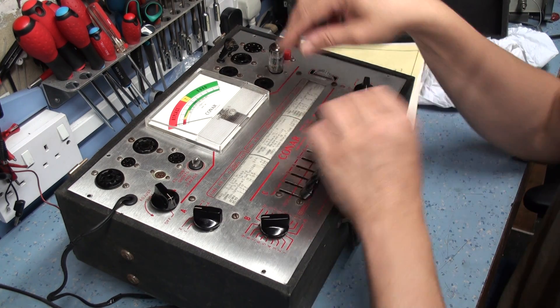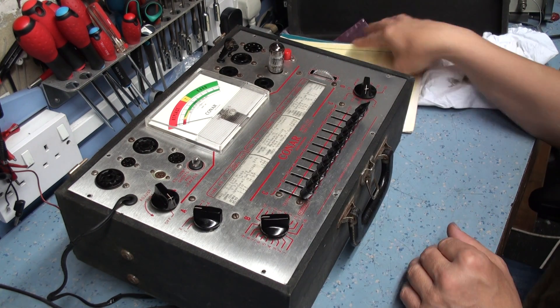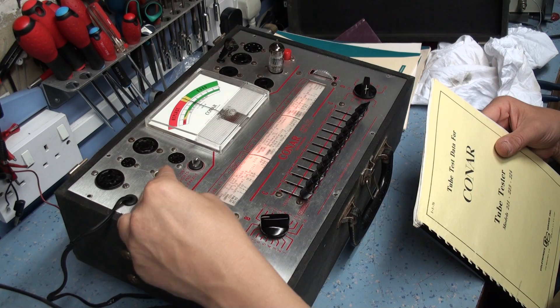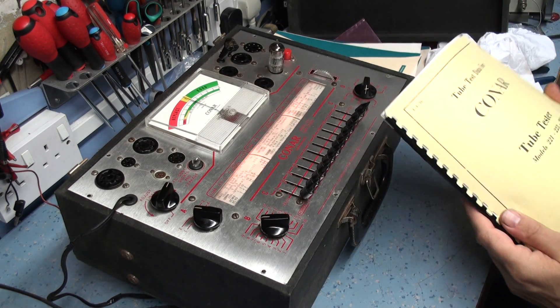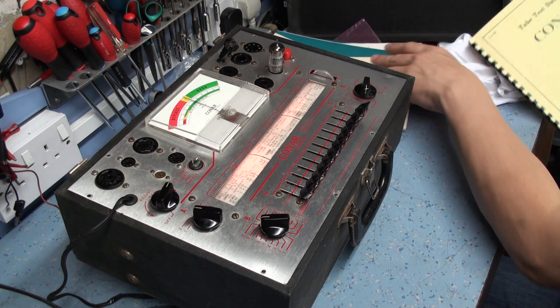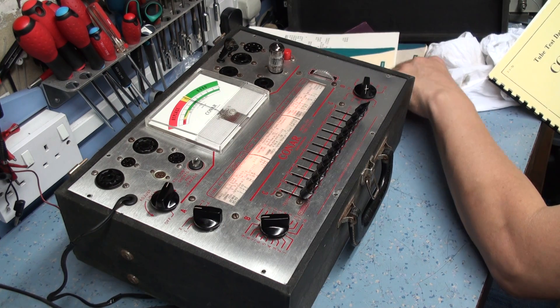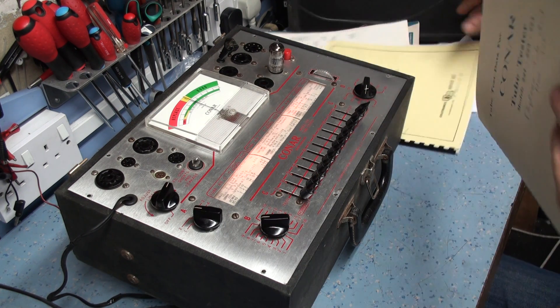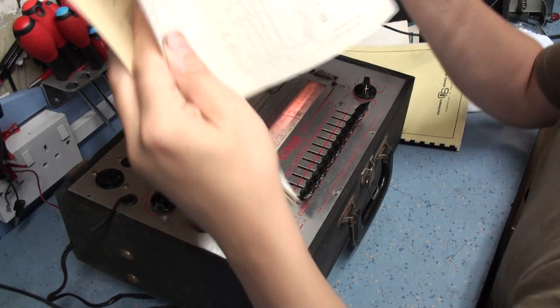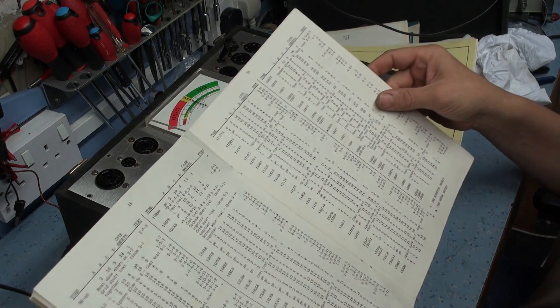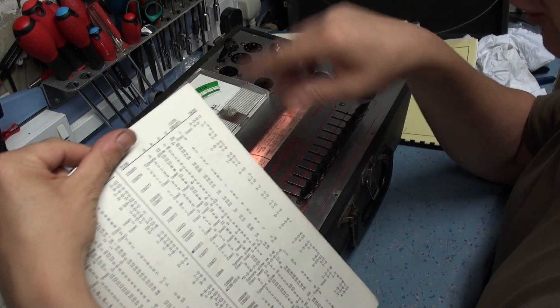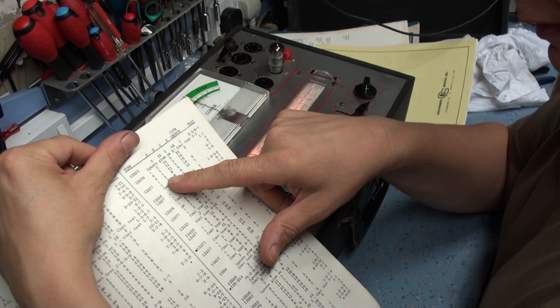This is a 12A87. We'll give this a test, and basically what you do is it's quite straightforward. You switch the set on, and adjust it for the line, so the needle is pointing right in the middle of the scale, and that's your line voltage. And then I'll just go through the setup procedure in the manual to explain how to do it. So we're looking for a 12A87 was it? There's a 12A87.